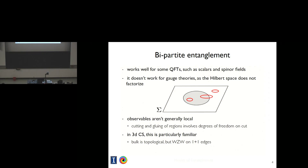That picture is very simple in cases where it actually makes sense — for example, in simple field theories of scalars and spinor fields, the degrees of freedom are in some sense local spatially. But in gauge theories this doesn't happen at all. The Hilbert space doesn't factorize the way I just described. The reason is that the observables are generically not local — they're loops, for example Wilson loops. If we imagine trying to cut the system spatially, we would have degrees of freedom that straddle the entanglement cut, so it's not a clean separation of degrees of freedom.